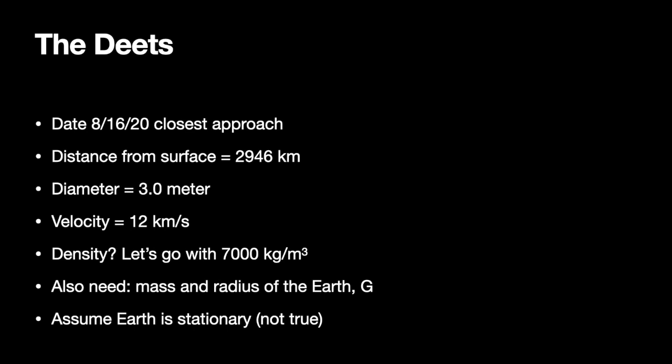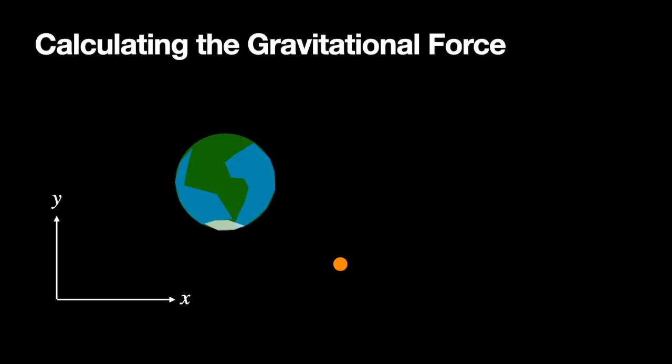One final assumption is that the Earth is not moving, just to make our calculations a little bit easier. Of course this is not true — the Earth is moving, going around the Sun. I did a rough estimate of this calculation previously, but I'm going to show you how to do it in Python.